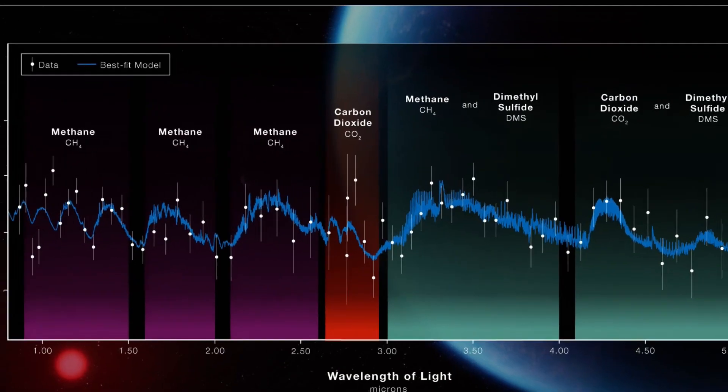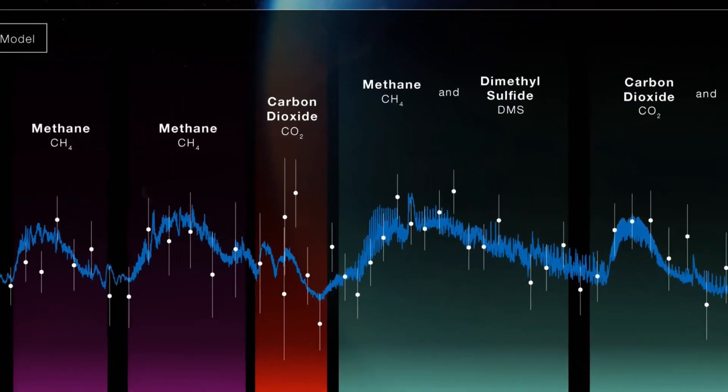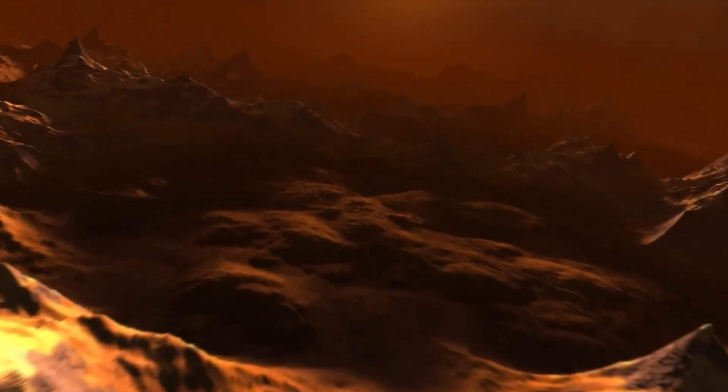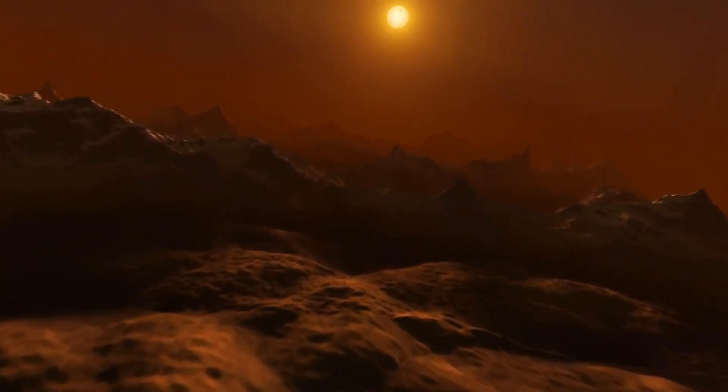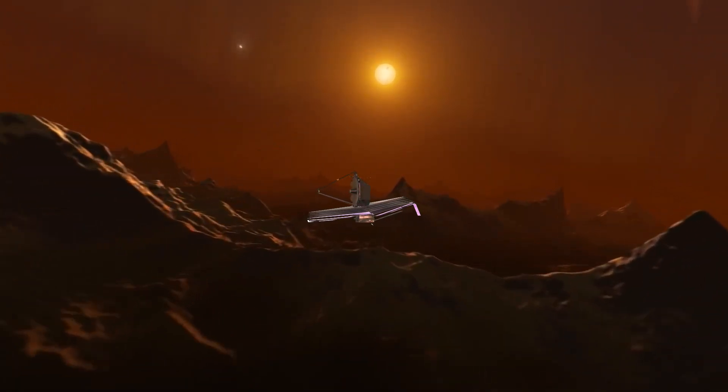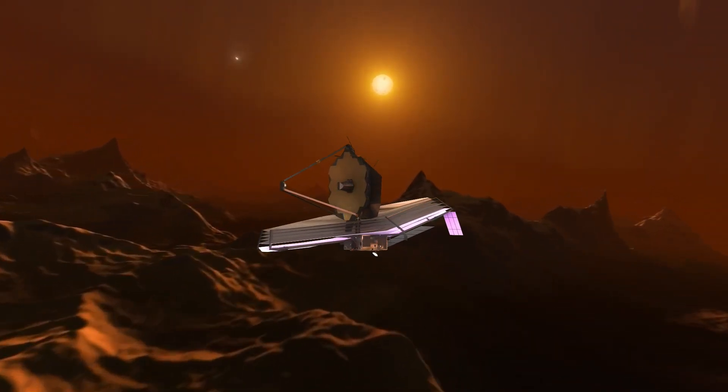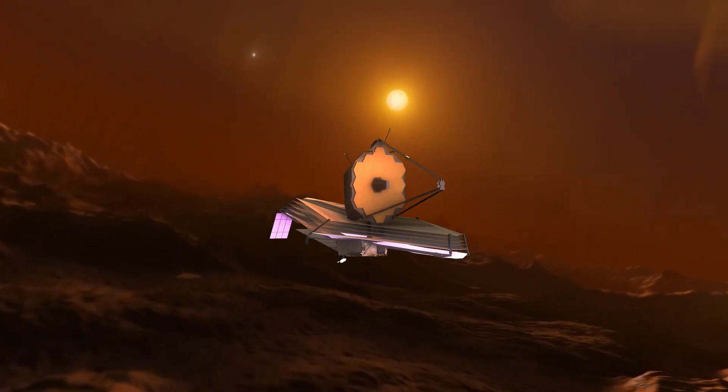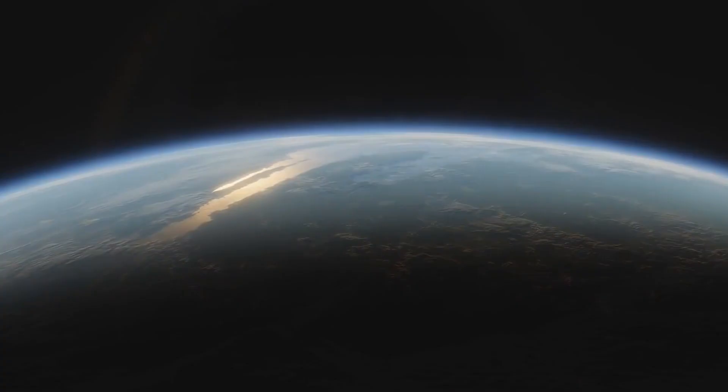Dimethyl sulfide is linked with life on Earth. It's an essential compound that plays certain ecological roles in K2-18b's biosphere. The research team is now anticipating turning JWST's mid-infrared MIRI to the exoplanet to look for more biosignature hints and, of course, dimethyl sulfide.